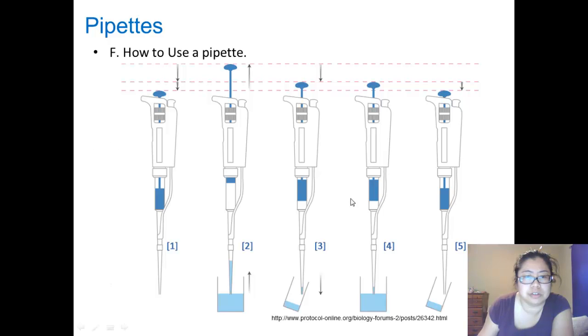So how do you use a pipette? The very first step is that you take the pipette, you set it to how much you need, and then you put your thumb on the plunger. Once it's on the plunger, you would push down to the first stop only.